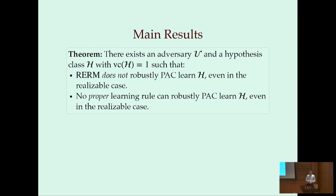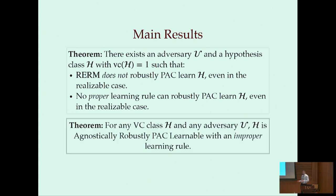So does this mean that all hope is lost and we can't really do robust PAC-learning? Surprisingly, we show that it's possible to do robust PAC-learning, we just need to be improper. So more formally, we show that for any VC class, any hypothesis class with finite VC dimension, and any adversary U, there is an improper learning rule that can robustly PAC-learn H. In particular, we find that allowing the learning rule to output a predictor that takes majority votes over predictors in the class can give us much stronger guarantees.